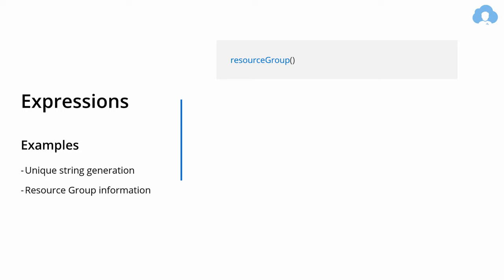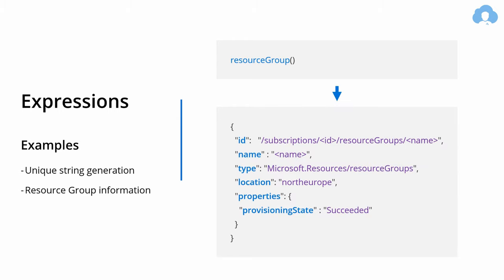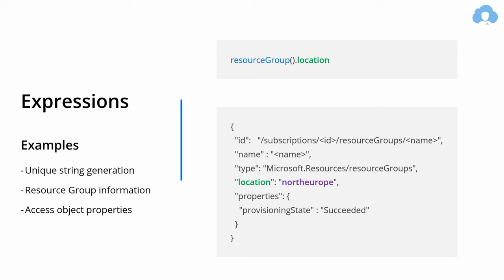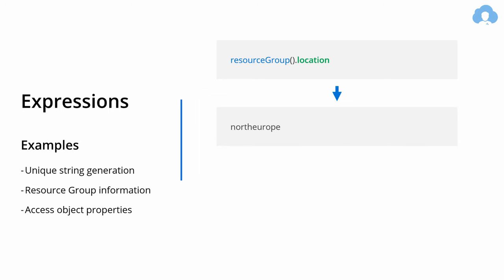Another great example is the resourceGroup function, allowing you to access information about the resource group you are currently deploying into. It will return an object with all properties describing the current resource group, and you can access properties of that object by typing a dot followed by the property name, which returns the value — in this case, it would return 'North Europe'.